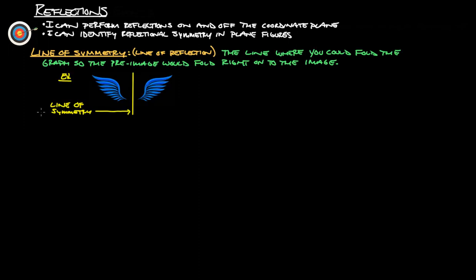First things first: a line of symmetry is also known as the line of reflection. It's a line where you could fold the graph so that the pre-image would fold right onto the image. For example, if this over here is the pre-image, and we folded it over this yellow line — the line of symmetry — it would fold right on top of these other sets of wings. This point here would fold right onto that point, and that point would go right on top of that point.